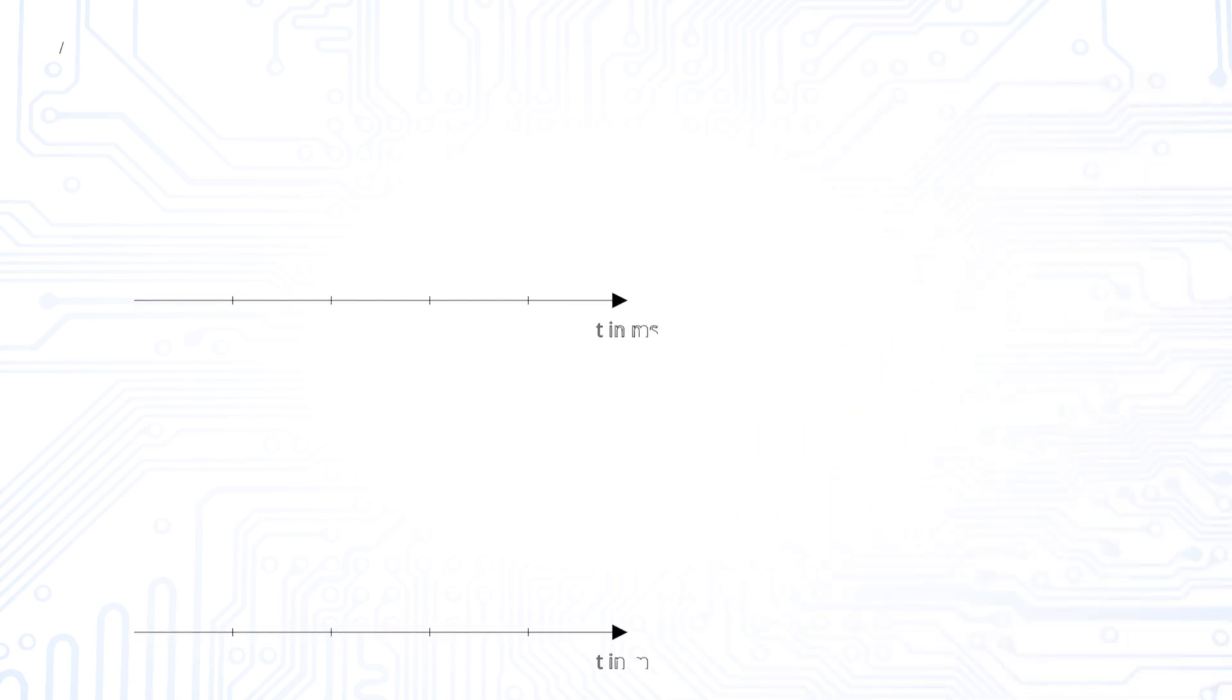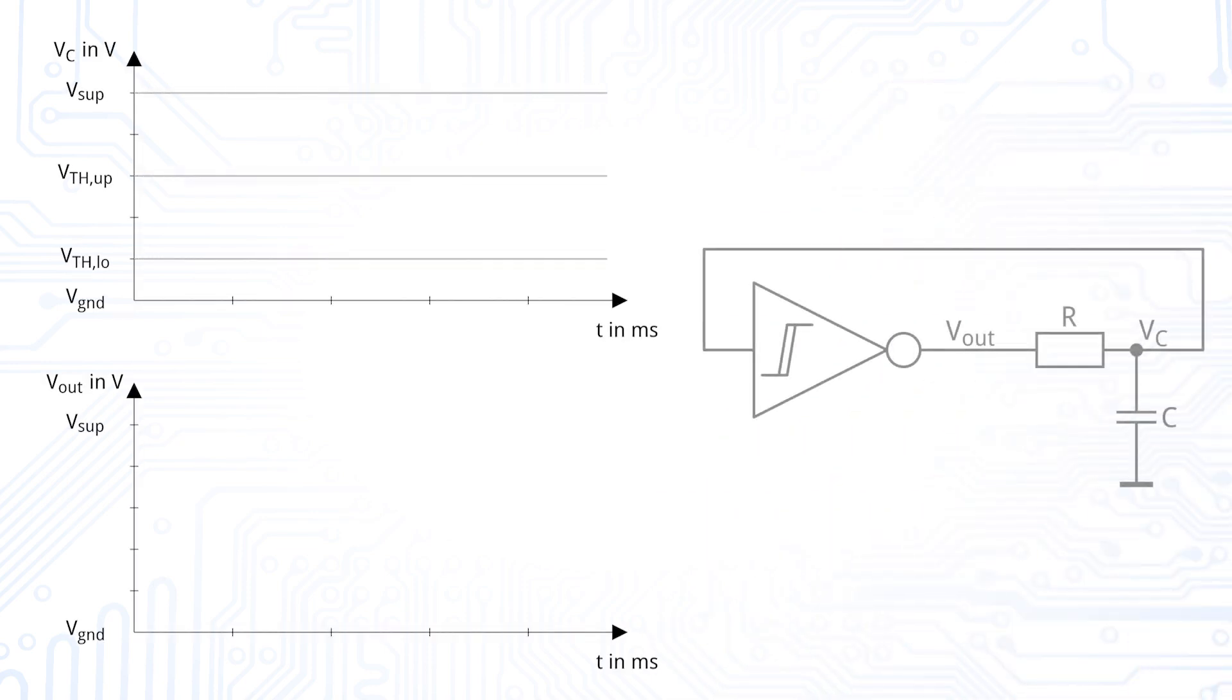Let us have a look at what happens in one time period. We assume that our inverting Schmitt trigger just switched to high and that our input, which is the voltage over the capacitance, is zero.